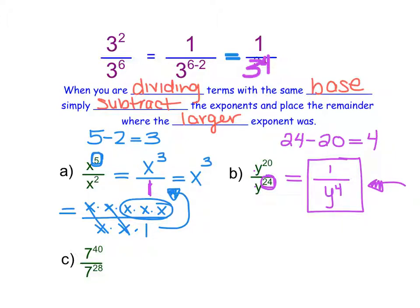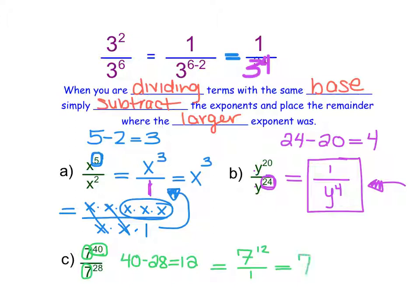Down here in part C, I notice that 7 and 7 are both a common base, so I can take 40 and subtract 28. That leaves me with 12 7's, and because I had more in my numerator to start, I know that I have 7 to the power of 12 in my numerator and 1 in my denominator. Because there's a 1 in my denominator, I can write this as 7 to the power of 12. While you could try to calculate this on your calculator, 7 to the power of 12 is a very, very large number, so it's fine to just leave it as 7 to the power of 12.